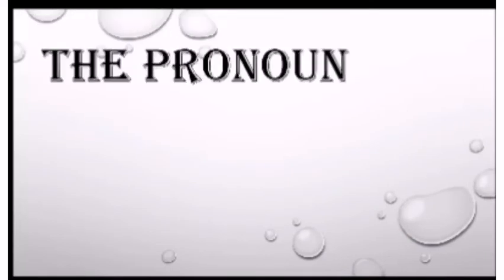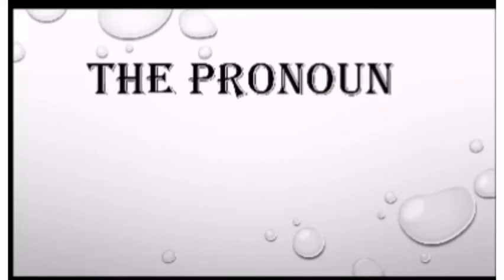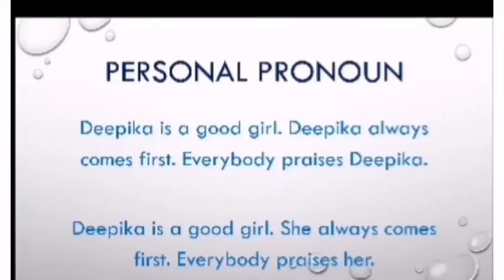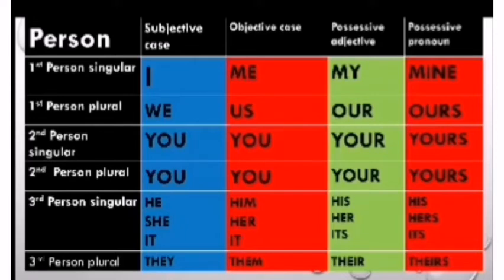In our previous class we learnt about the pronoun and we learnt its definition — that is, a pronoun is a word which is used instead of a noun. Then we learnt about personal pronoun, its cases and its three persons: first person, second person and third person. We learnt about possessive case which has two forms — one is used in adjective form and one is used as a pronoun, like 'my' and 'mine'.